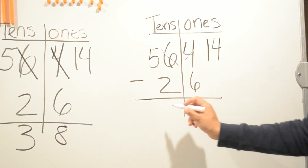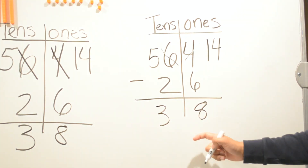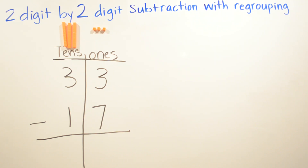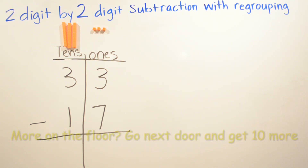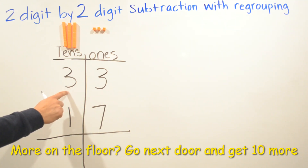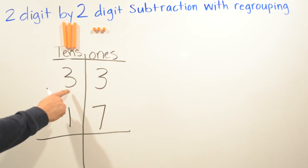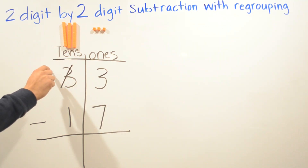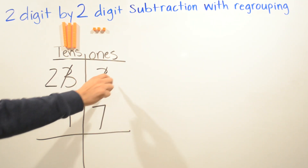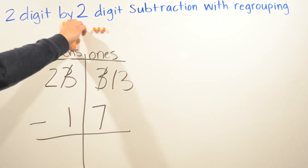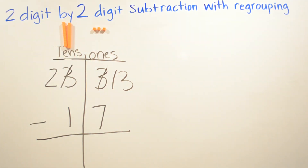We get the same answer as when we used the manipulatives. Now we're doing 33 minus 17. More on the floor — which we do — go next door and get ten more. We're gonna borrow from the three; this three becomes a two, and this three becomes a thirteen.